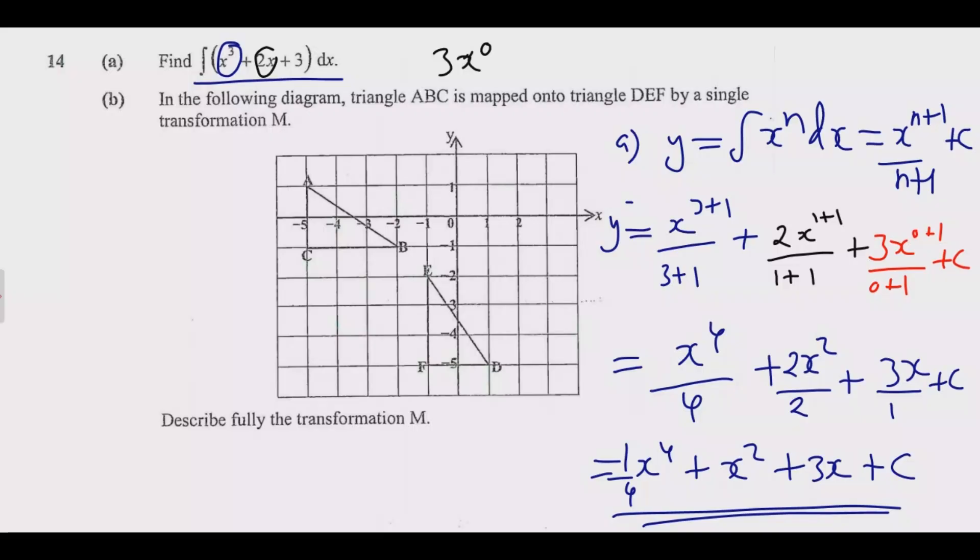At this point we need to look at the pairs, so we have A and D. A is on this side, D is on this side. Then you have B and E, so B and E they are close to each other.